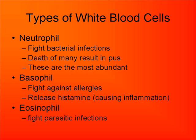A basophil is another type of white blood cell that fights allergies. They release something called histamine, which causes inflammation in the area. If you're familiar with antihistamines, they work against this histamine that basophils release to reduce inflammation so you can breathe better. The final type on this slide is an eosinophil, which fights parasitic infections like malaria and other parasites.